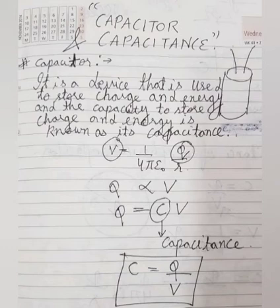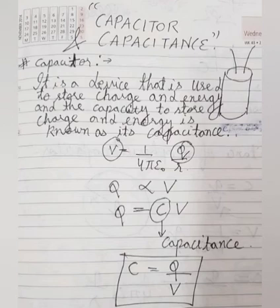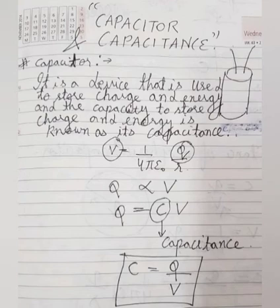Now let us see how a capacitor works. Consider a fan in your house. If you look at the fan and pull the cover off the top, you will find a white colored cylindrical device over there, which is also known as a condenser. That condenser is actually your capacitor. So how does this capacitor work for the fan?